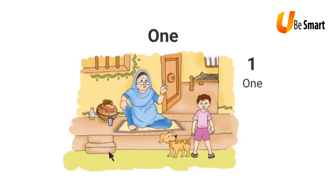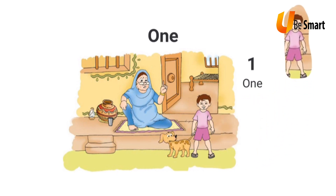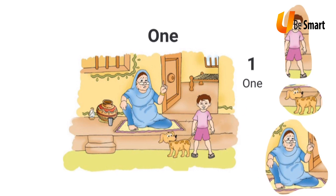In this picture, I see many objects. Now, I am going to take out the objects that are 1 in number. For example, I have one boy in this picture, and I have one dog in this picture. And I have one grandmother in this picture. And I have one pot in this picture. And I have one cot in this picture. All these things in the picture are 1 in number.